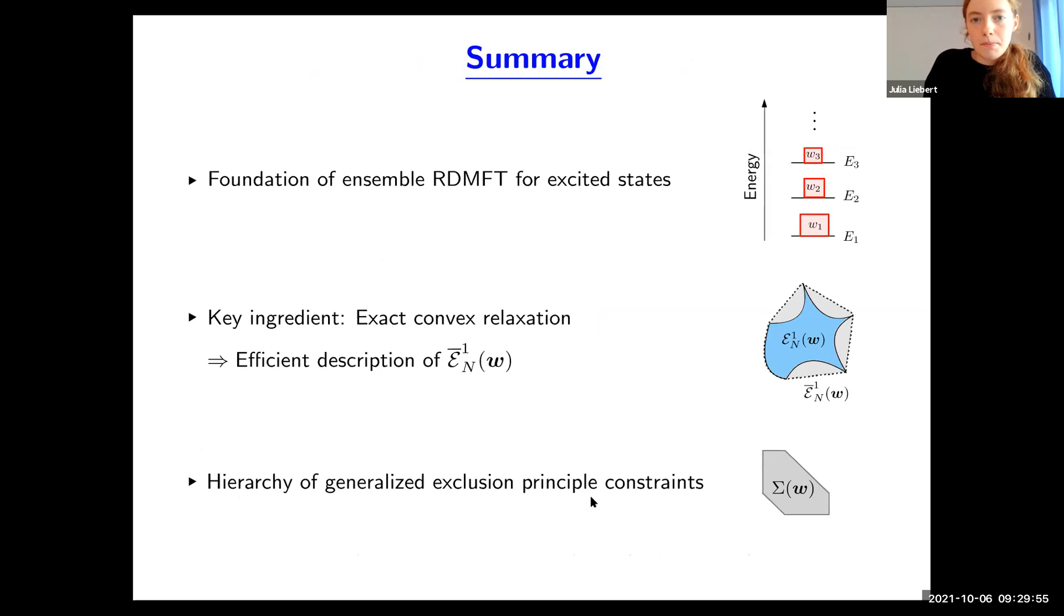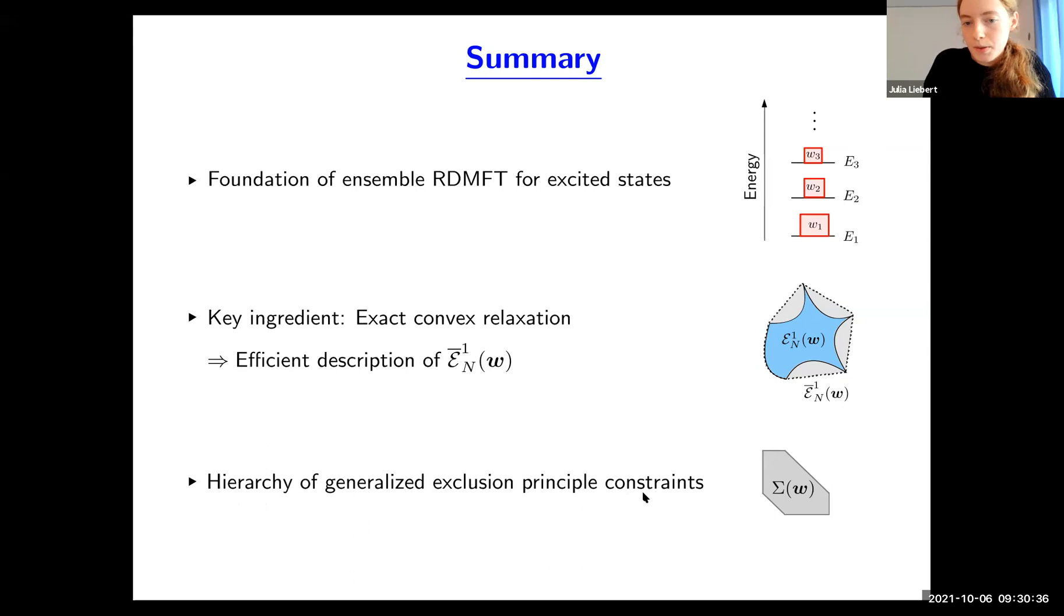Let me provide a short summary. We started with foundations of ensemble RDMFT for excited states, consisting of two parts: a variational principle and a constraint search, which allowed us to define our universal functional. The problem was that the domain of the functional was too complicated to describe in practice. The key idea was to apply exact convex relaxation, which allowed us to obtain an efficient description of the functional's domain. We discussed one remarkable consequence: we found a hierarchy of generalized exclusion principle constraints for mixed quantum states. Thank you very much for your attention.